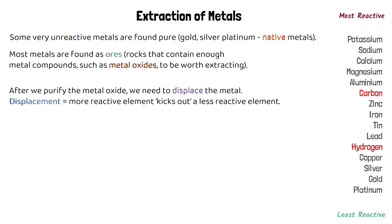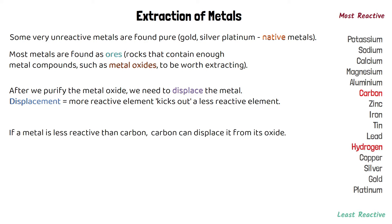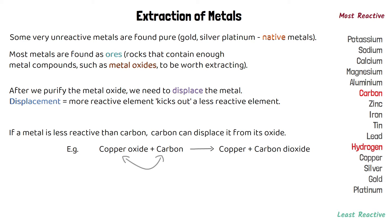Displacement reactions are when a more reactive element kicks out a less reactive element and takes its place. If a metal is less reactive than carbon, carbon is able to displace it from its oxide, so we can extract copper from copper oxide using carbon. Because carbon is more reactive than copper, carbon displaces copper from copper oxide, and the two products of this reaction would be pure copper and carbon dioxide. We can do this for any of the other metals that are less reactive than carbon.